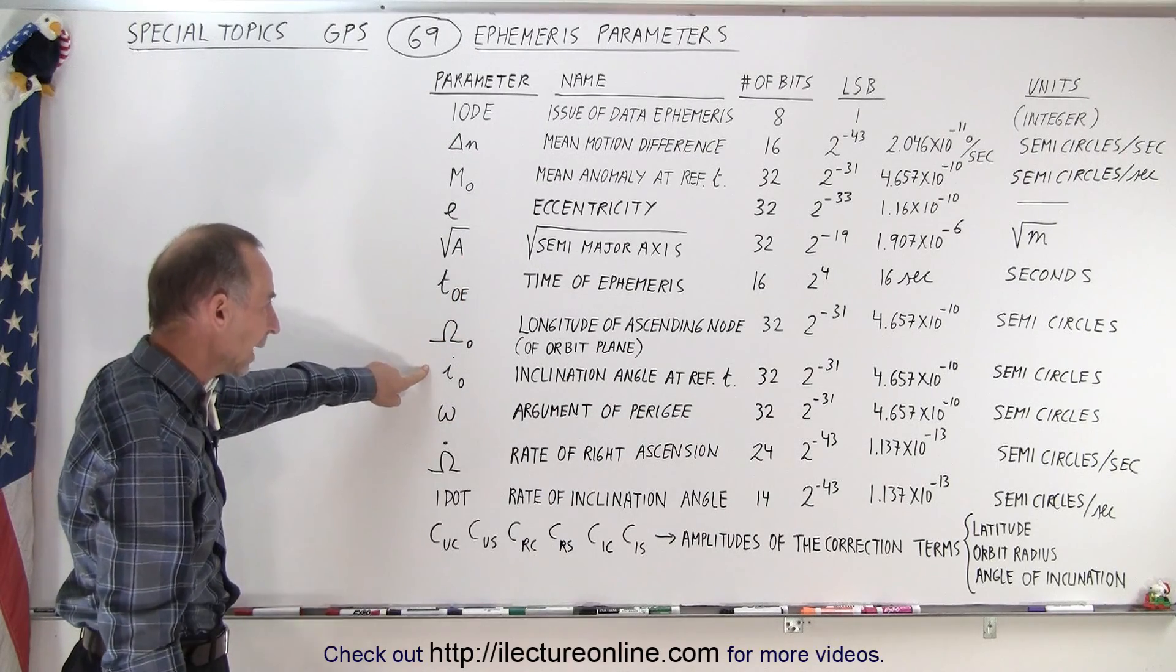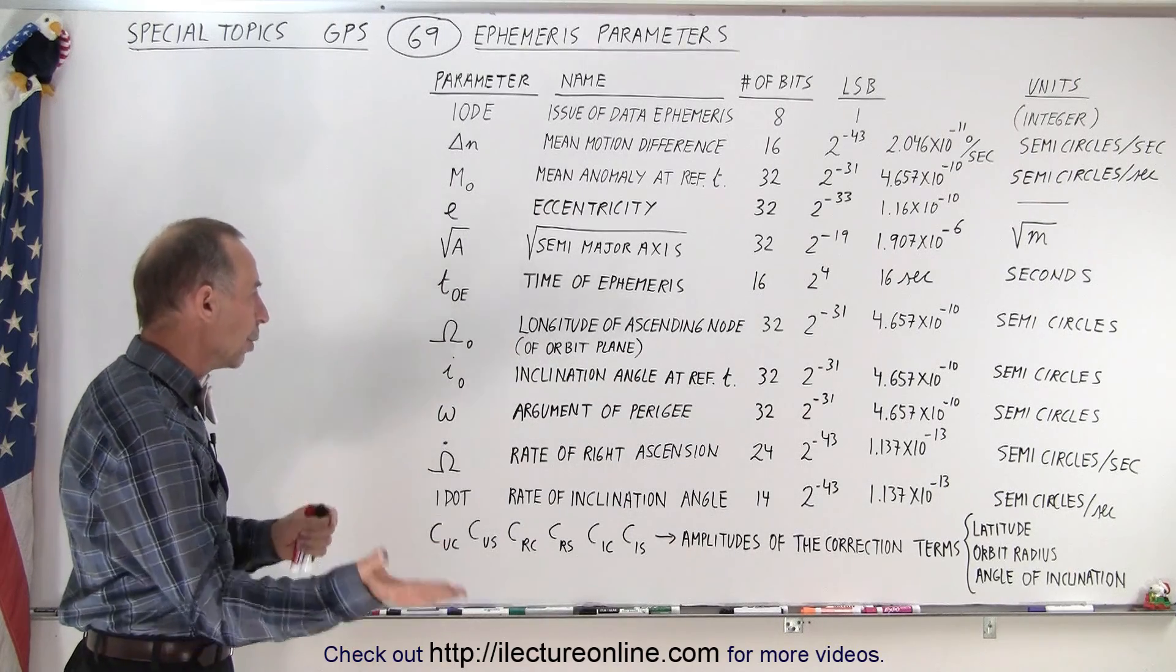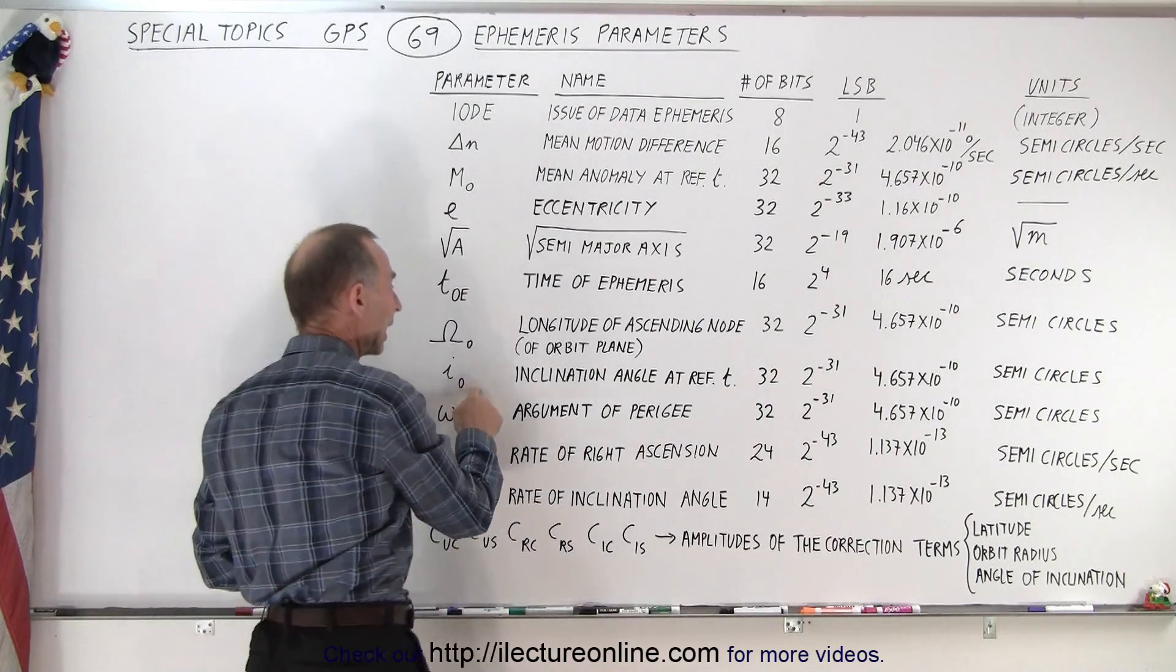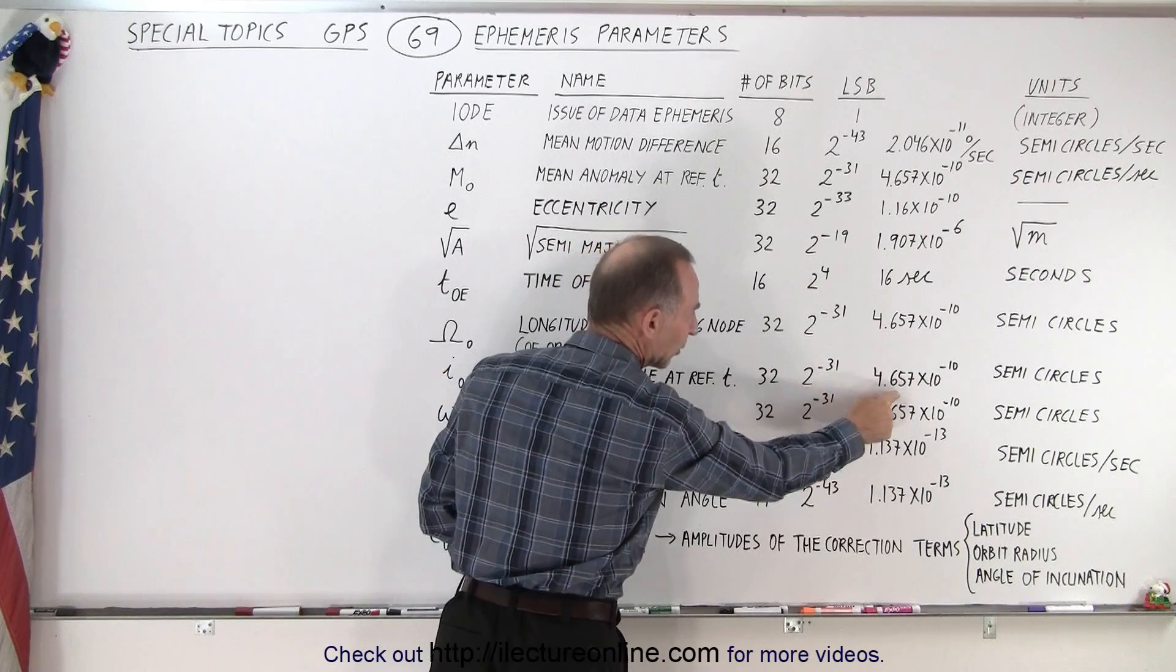Here we have the inclination angle at reference time. At some particular moment in time, we want to know what the inclination is. That can be different. We need to be able to keep track of that. Again, the LSB is a very tiny number.